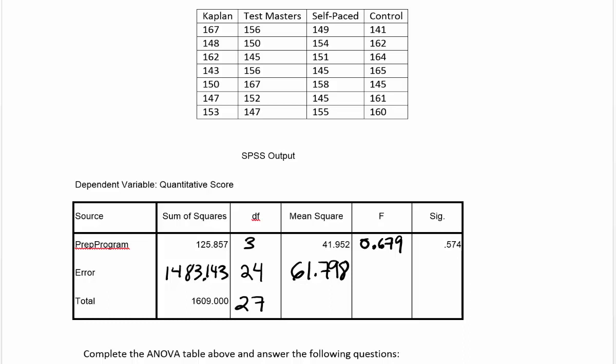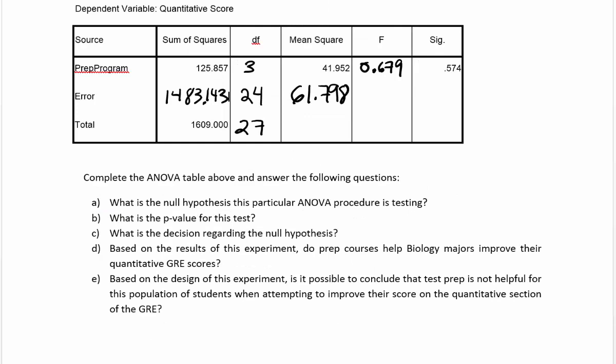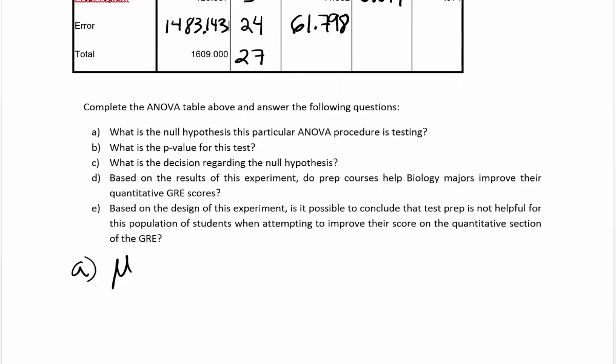Let's answer the questions below to see what the table is telling us. The first question asks what's the null hypothesis this particular ANOVA procedure is testing. Remember that we're always testing the hypothesis that all the treatment means are equal to one another. There are four treatment means. The answer to part A is that the mean for Kaplan equals the mean for Test Masters, equals the mean for self-paced, equals the mean for control. Those four means are equal to one another. The alternative hypothesis would be that at least two of these means differ significantly, or at least one mean differs from the others significantly. Basically, they're not all the same in the alternative hypothesis.